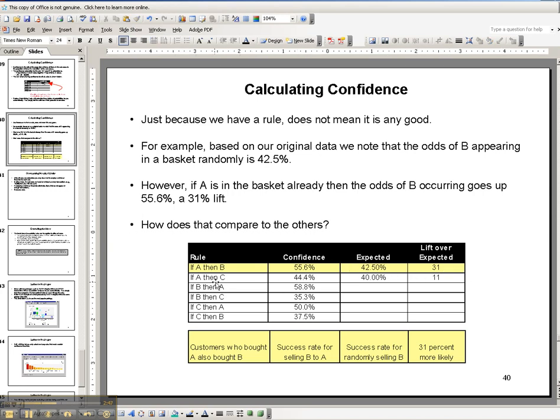So that's the same thing here. If A is in the cart, then the likelihood C will be in there is 44.4%. But what's just the likelihood in general that C will be in the cart? Well, it's 40%. So there is a little bit of a lift if A is already in there in terms of the likelihood C will be in there of 11%.